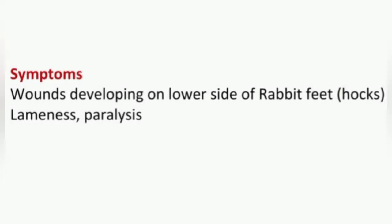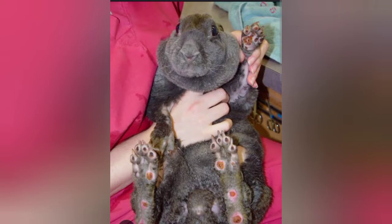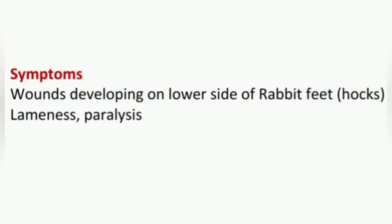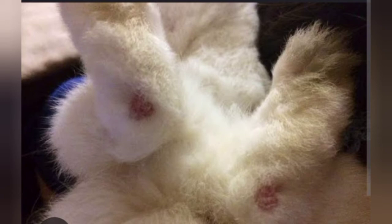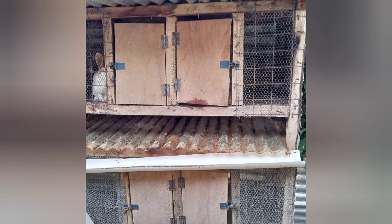The seventh common illness is known as sore hocks. Hocks means the feet of the rabbit. It is characterized by wounds developing on the lower side of the rabbit's feet, that is its hocks, along with lameness and paralysis of the hind legs. This could be caused by sharp objects that hurt the rabbit or bacterial infections due to unclean conditions in the cage.